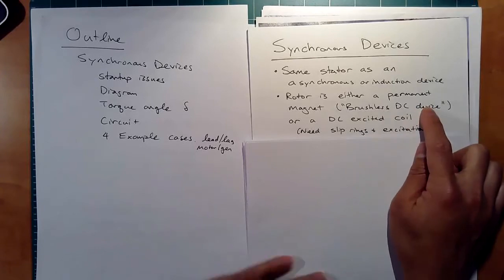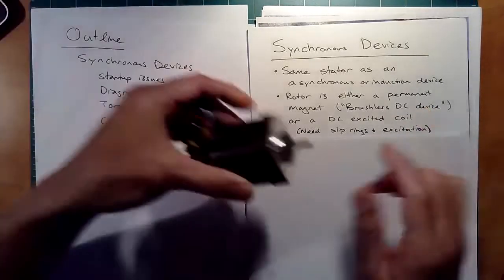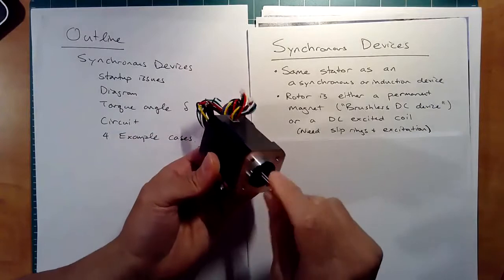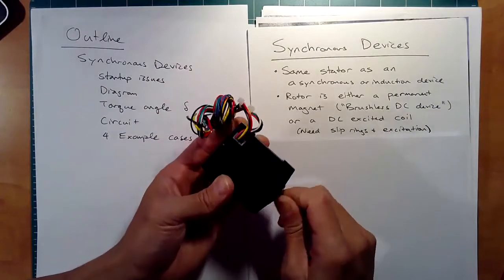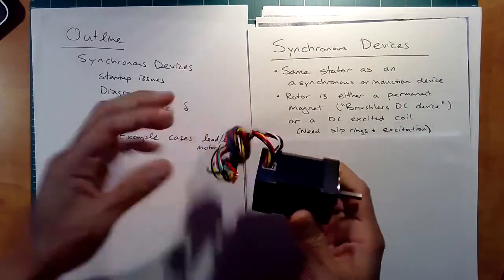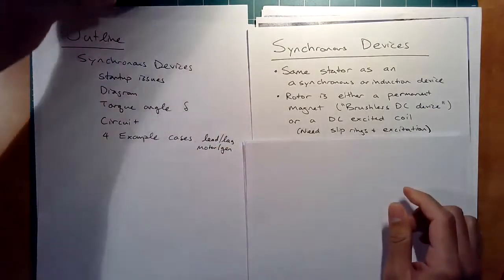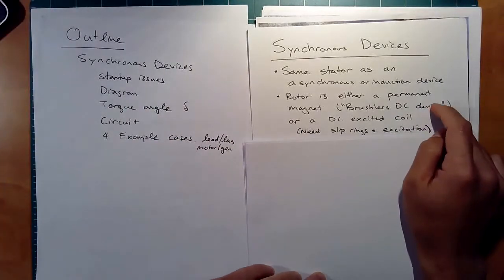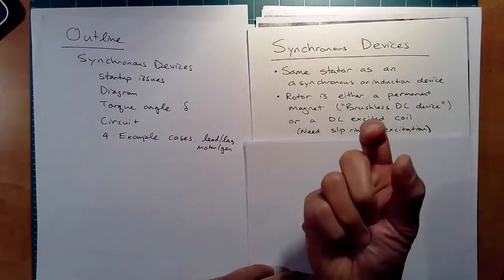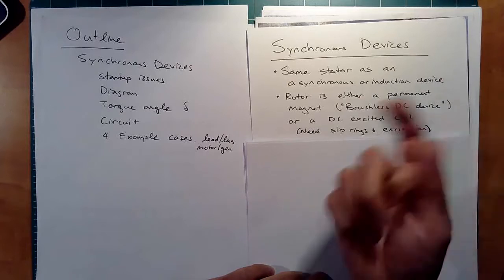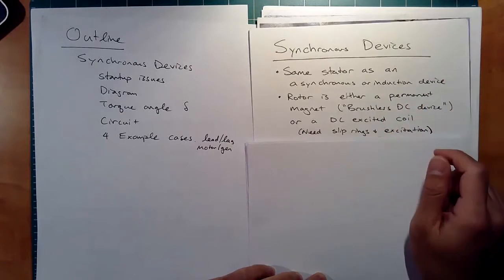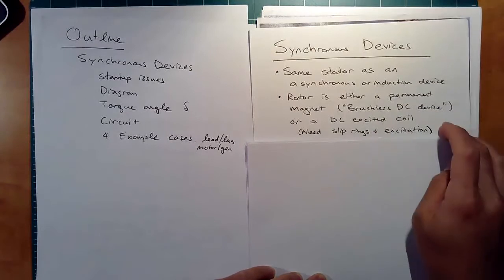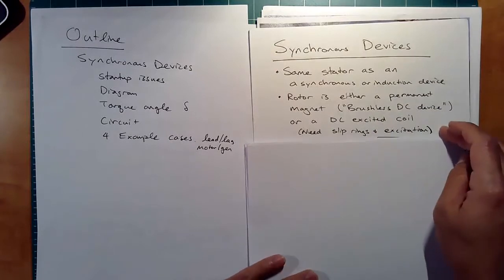Brushless DC devices — like the outrunner motors you see on drones — have permanent magnets on the rotor and are excited with three-phase current. Synchronous devices and brushless DC devices are the same thing.